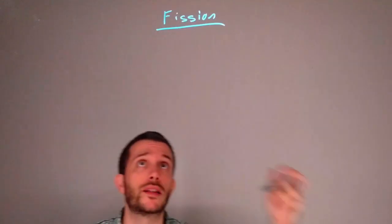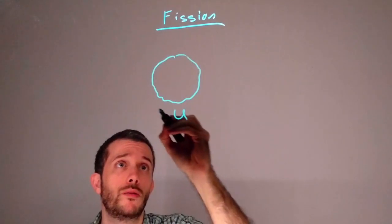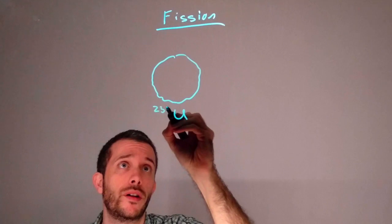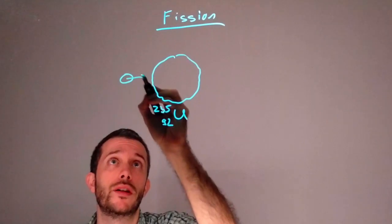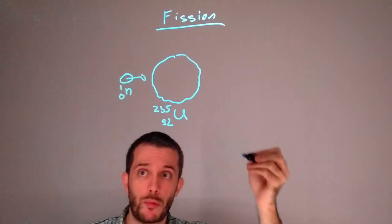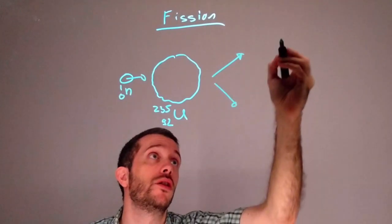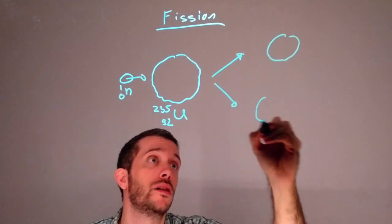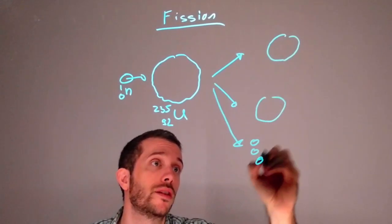Fission is a nuclear reaction in which a large nucleus splits. An example: if we have uranium-235, and if that uranium is hit by a neutron at the right speed, then it will temporarily become uranium-236 and then split into two chunks and some additional neutrons that will fly off.